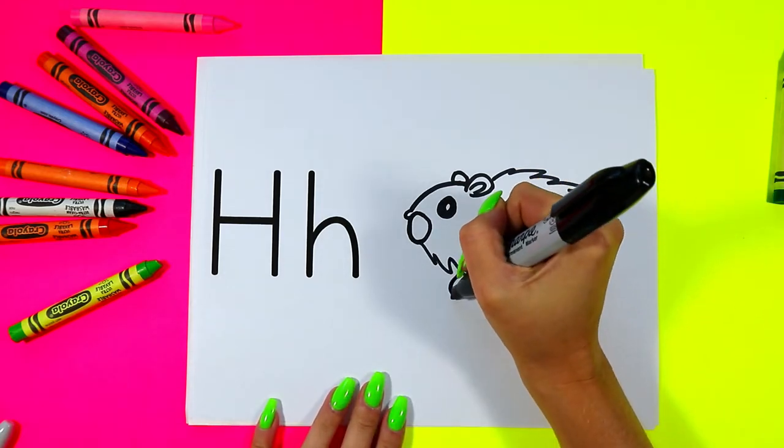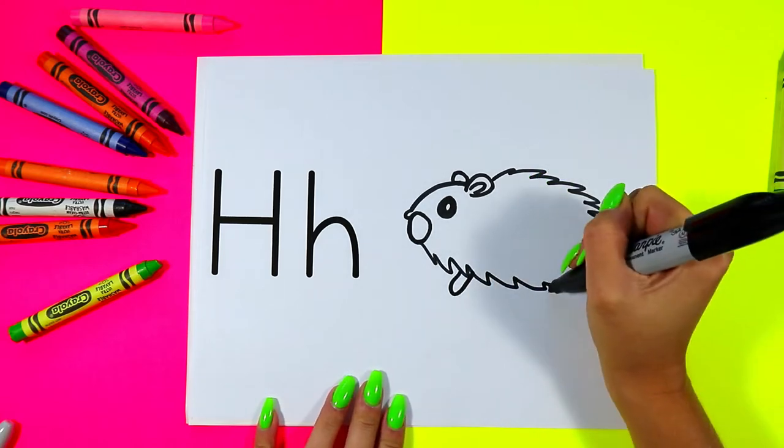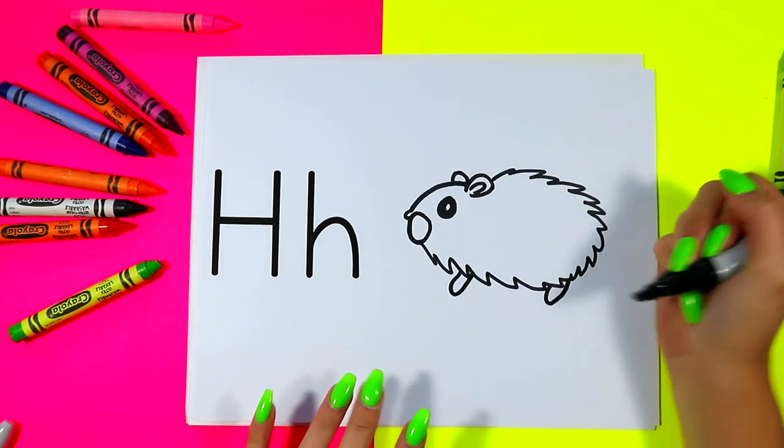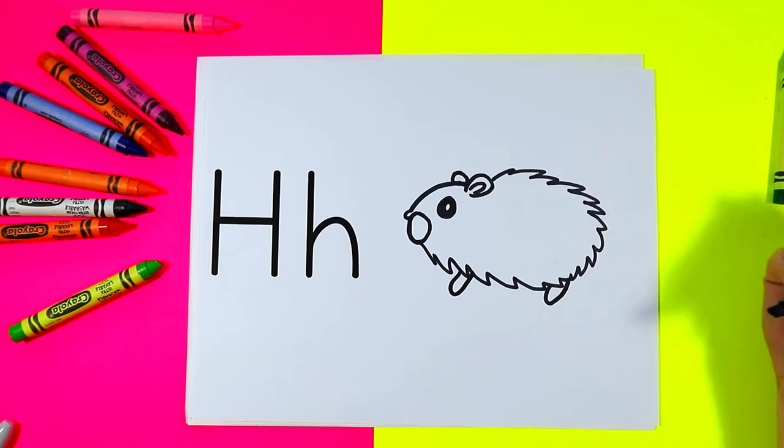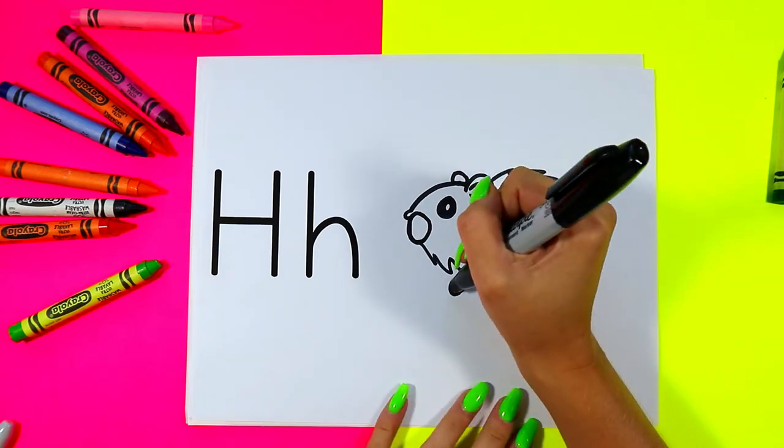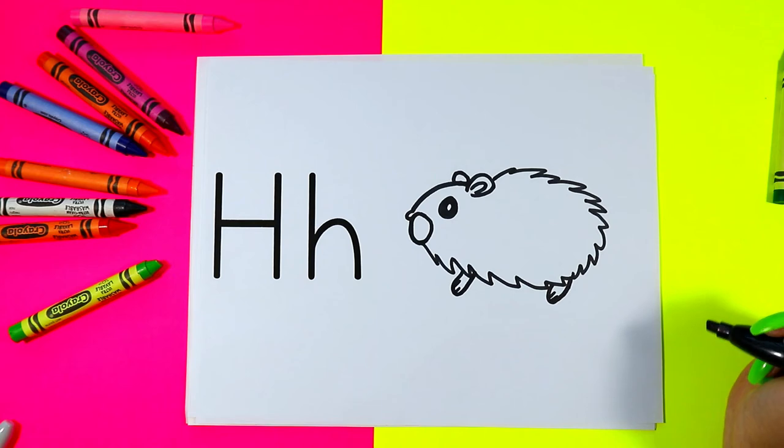Next we're going to draw one paw in the front and one paw in the back on our hamster. And we can add a couple little lines on the bottom for some little hamster toes.